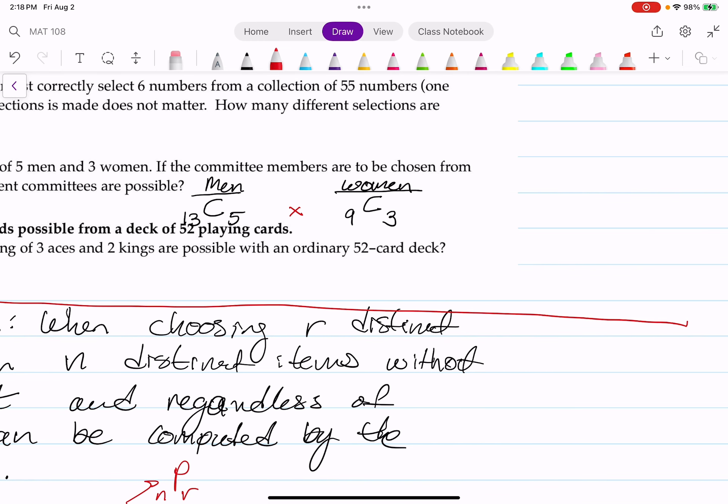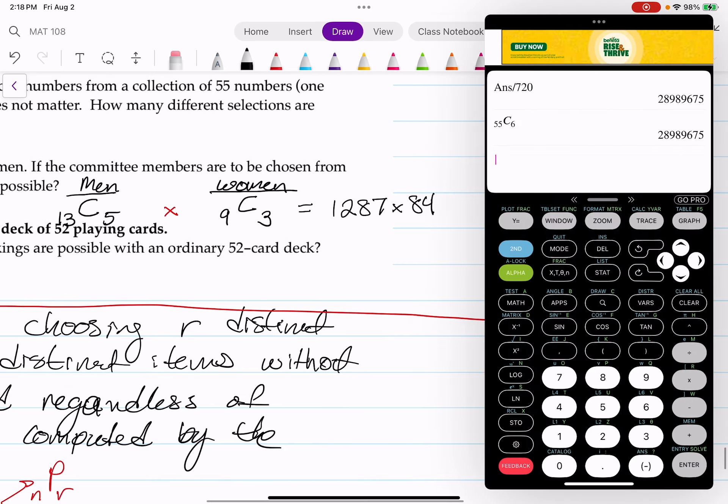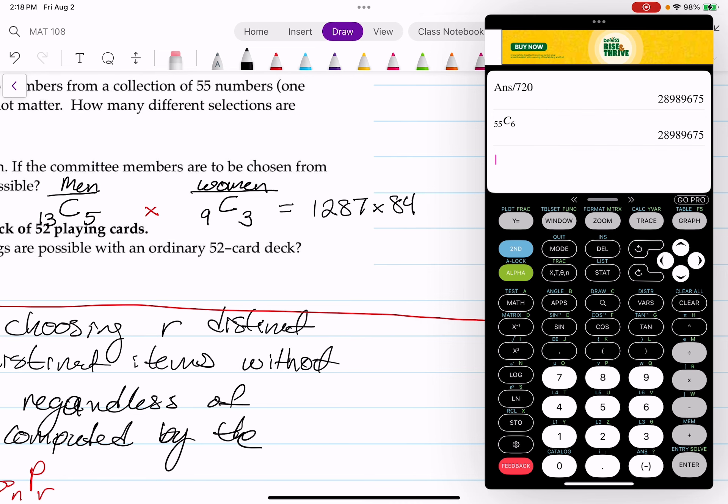So I'm going to go off a hunch and I'm going to verify, but I do believe the combination of 13 and 5 from my previous studies is 1,287. And that's going to be multiplied with the combination of 9 and 3 and that is going to be 84. So let's just verify that's correct. So the combination of 13 and 5, 1287, good.